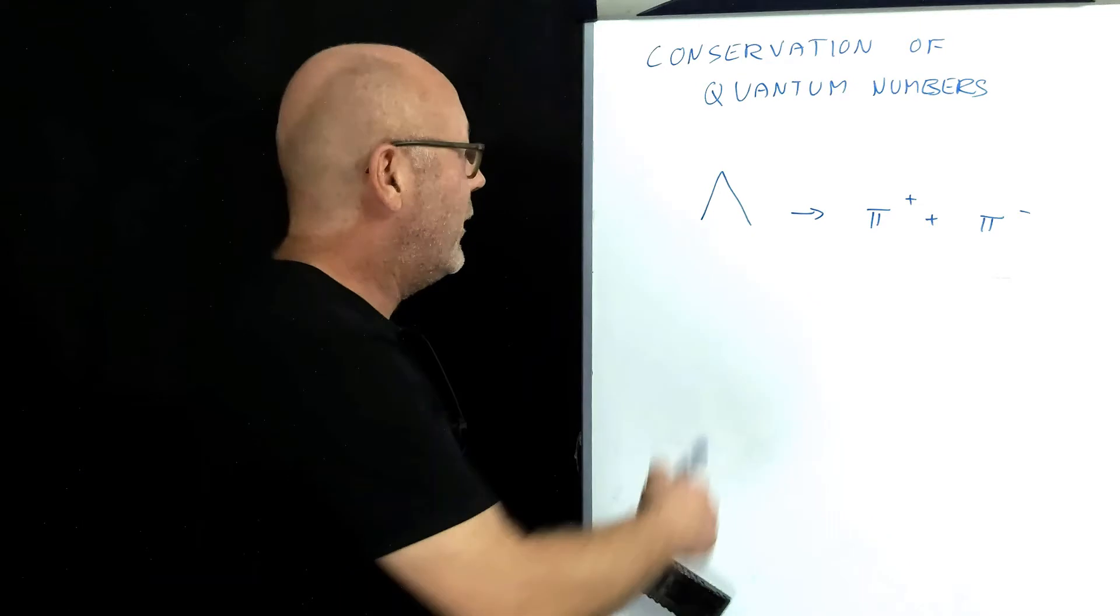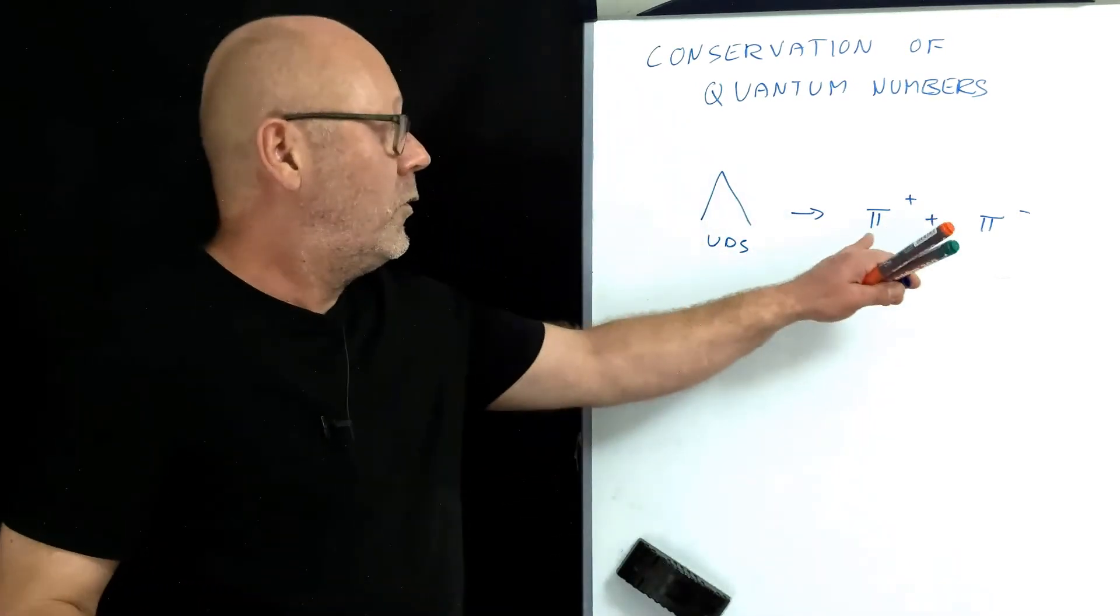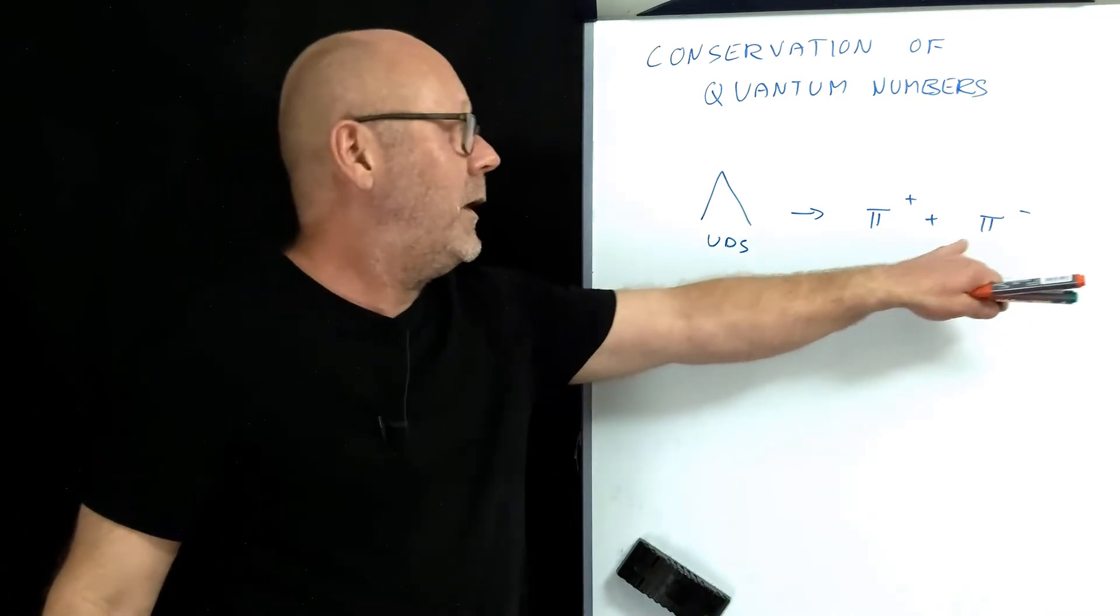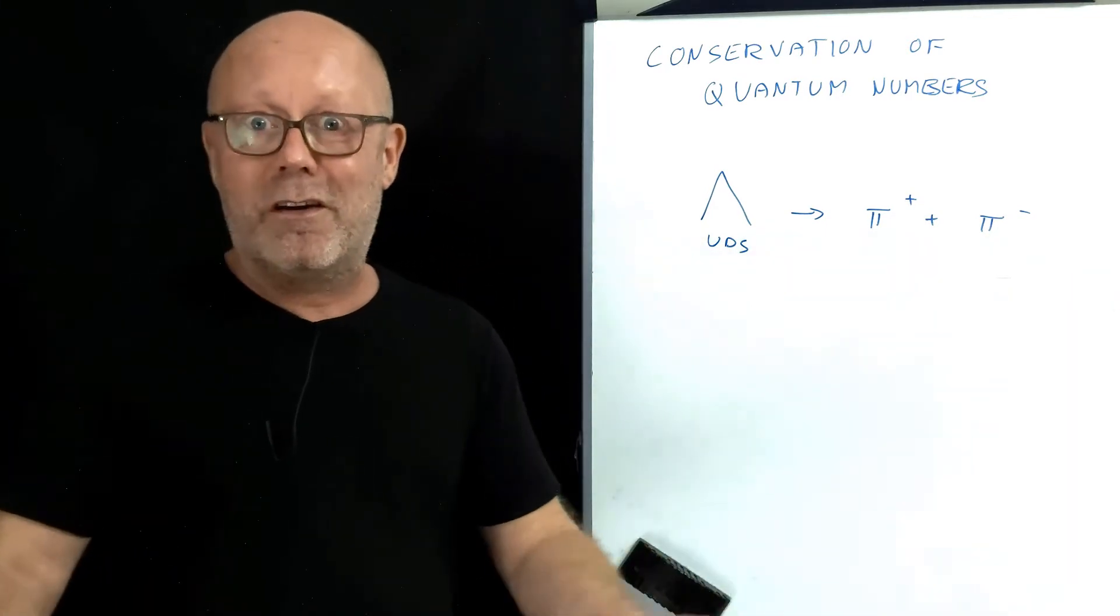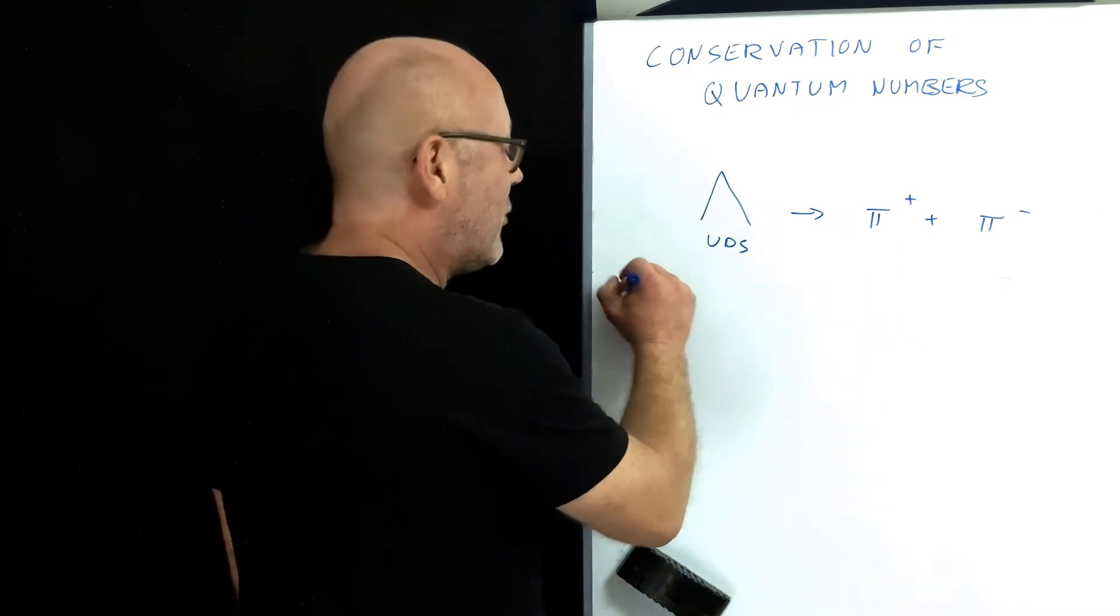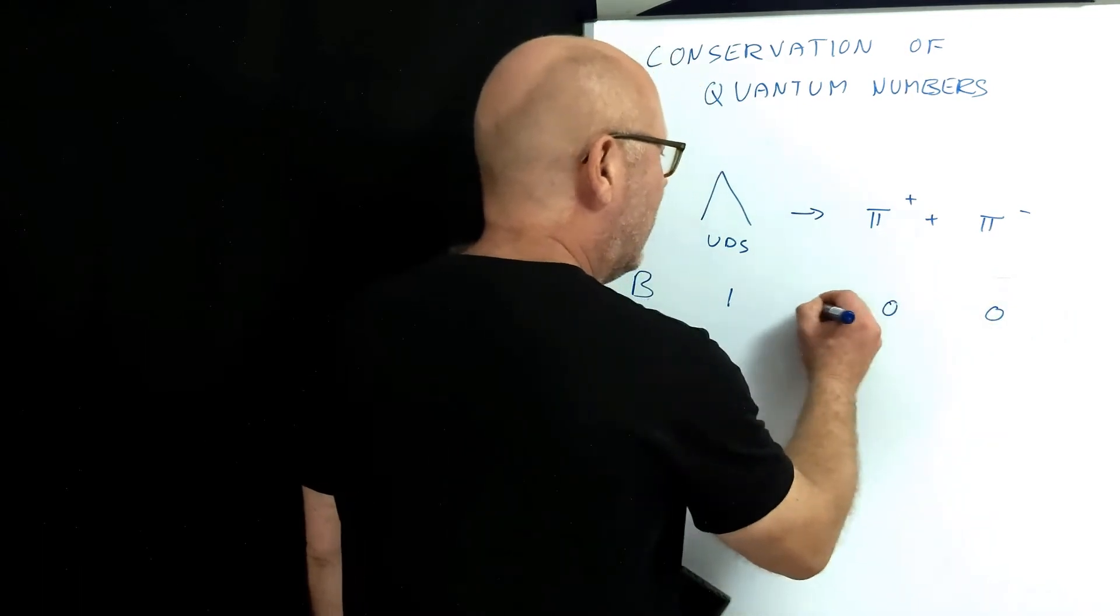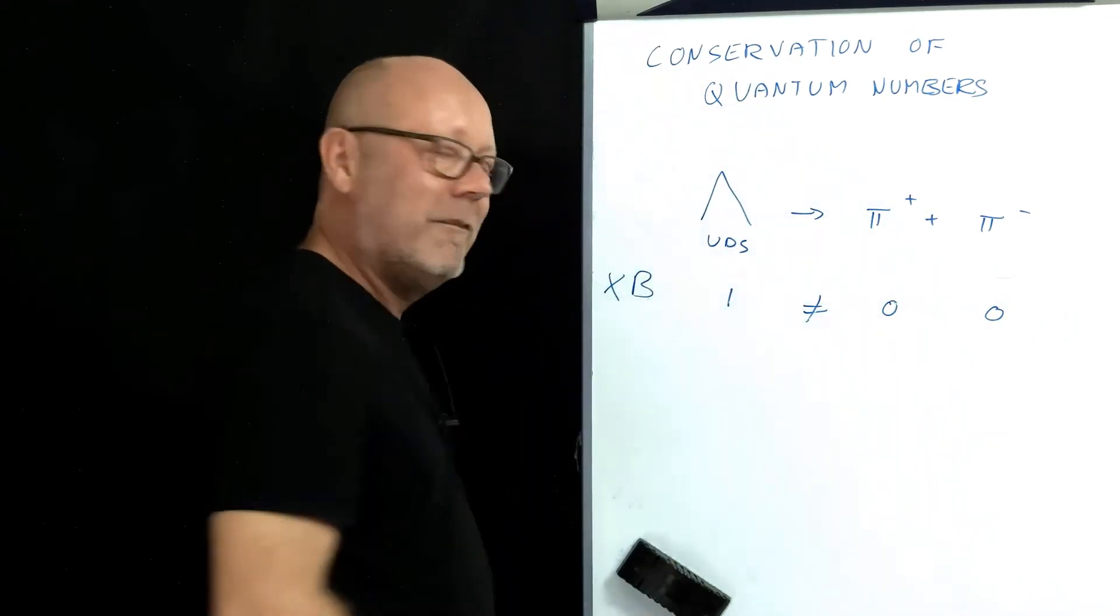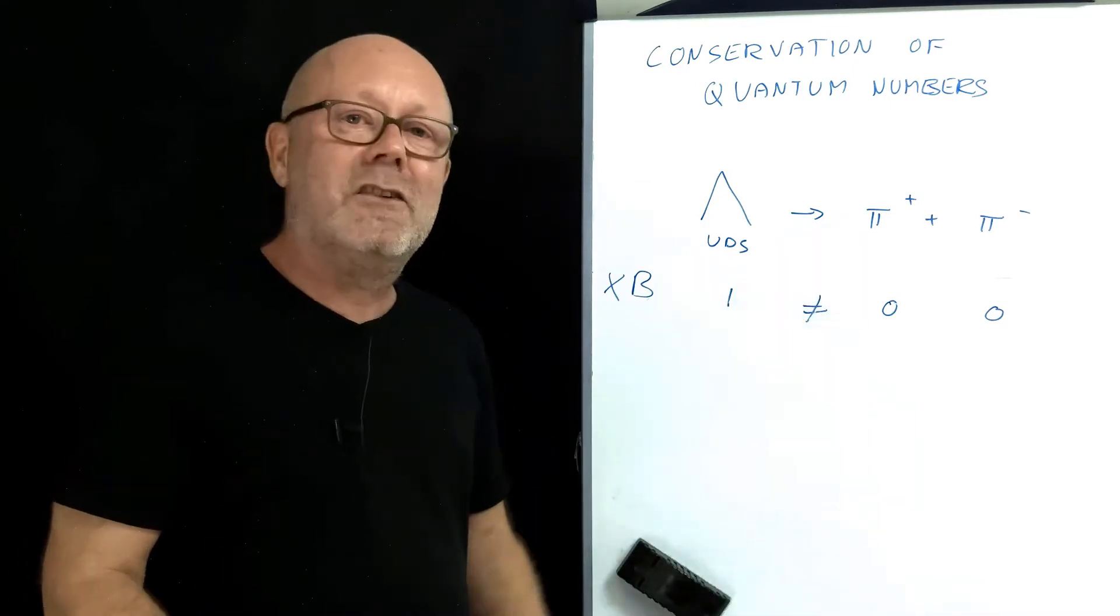In that case, we have a lambda, which is UDS, transforming into a pion positive, plus a pion negative. I can see immediately that won't work. That won't be possible, because when I look at the baryon number, this is a baryon, and these are mesons, so no baryon number. Not check! I don't need to continue further. I know this is not possible.